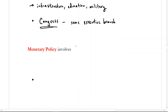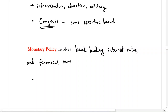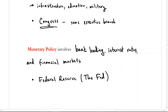Next is monetary policy, which involves bank lending, interest rates, and financial markets. This is done through the Federal Reserve — also known as the Fed. When we talk about the Fed, we're not talking about the government generally, but this specific arm of the government: the Federal Reserve System, composed of a chairman, a board of governors, and a system of Federal Reserve banks around the country, along with the Federal Open Market Committee, which conducts all the monetary policy.